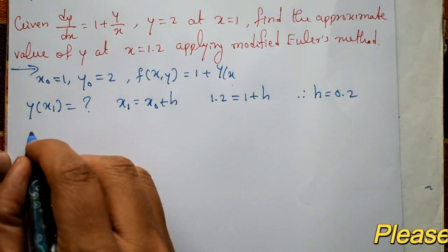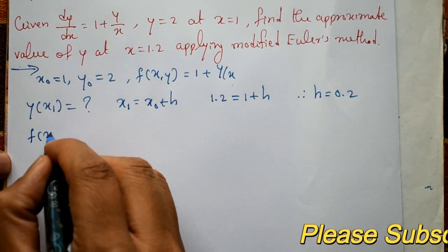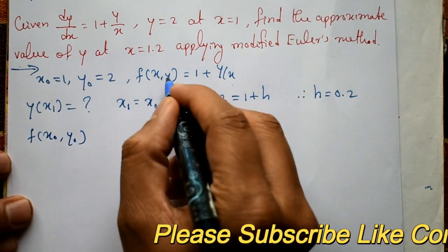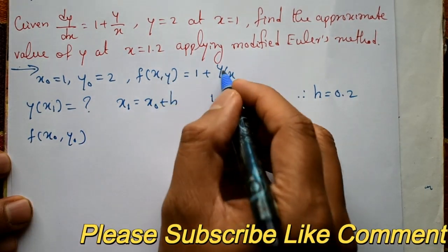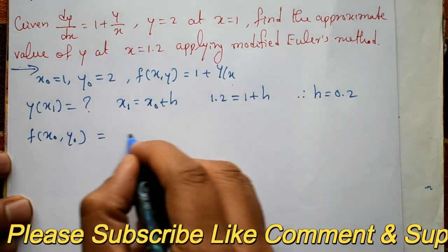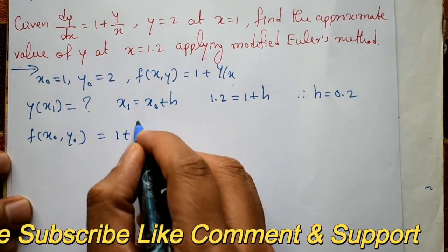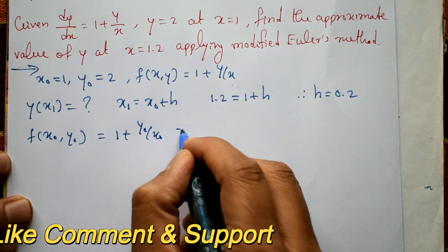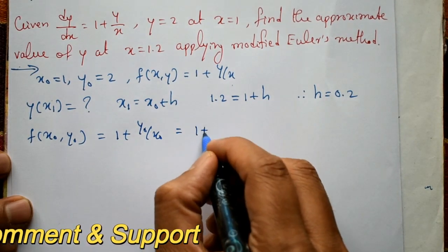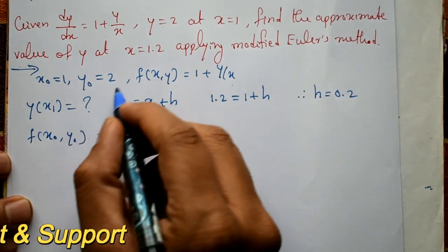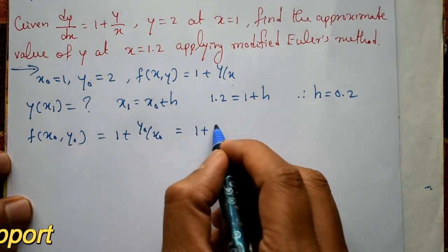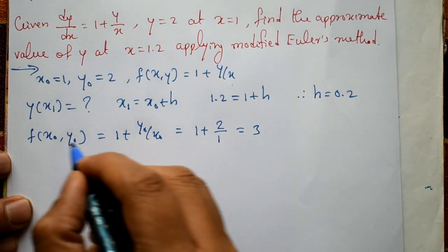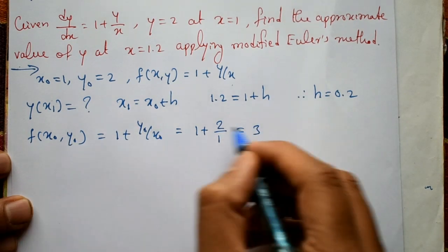We also need f of x0 and y0 using the initial values in this function. This is equal to 1 plus y0 by x0, that is 1 plus 2 by 1, which equals 3. So f of x0, y0 equals 3.